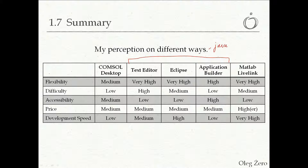I have evaluated these different ways in five different categories. By flexibility I mean how flexible you can make the models. Generally I would say a console desktop is already quite flexible — it allows you to do a lot, especially on the post-processing side, creating different graphics and different plots. I would rate it as medium. Comparing that to working with a text editor or Eclipse using Java, these two methods will provide very high flexibility of working with the models.